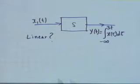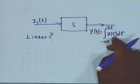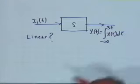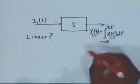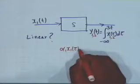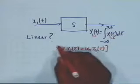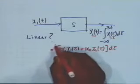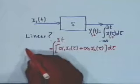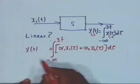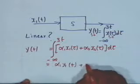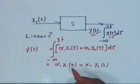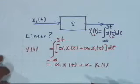If I apply X1(T), the output shall be Y1(T). If I apply X2, the output is Y2. So if I apply alpha1·X1(tau) plus alpha2·X2(tau), then the output should be alpha1·Y1(T) plus alpha2·Y2(T). You can easily see that this is the case — it obeys superposition and also obeys homogeneity. The operation itself is a linear operation, so it is linear.